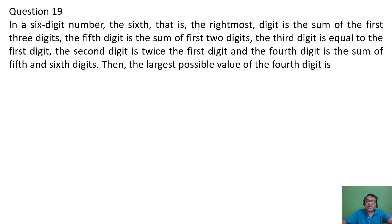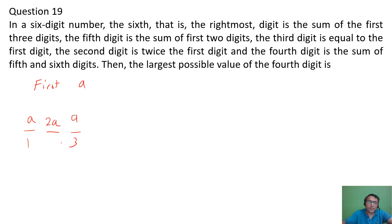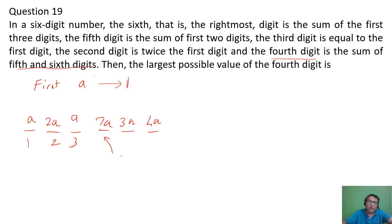Next problem: a 6-digit number where the 6th digit (rightmost) is the sum of the first 3 digits, the 5th digit is the sum of the first 2 digits, the 3rd digit equals the 1st digit, and the 2nd digit is twice the 1st digit. Let the 1st digit = a. Then: 3rd digit = a, 2nd digit = 2a, 5th digit = a+2a = 3a, 6th digit = a+2a+a = 4a, and the 4th digit is the sum of the 5th and 6th digits = 3a+4a = 7a. Since a must be a single digit integer and 7a must be a single digit, a can only be 1. So the 4th digit = 7.